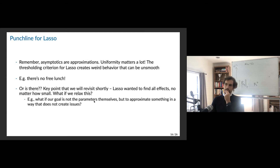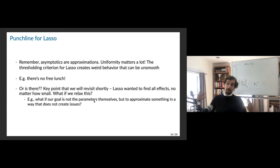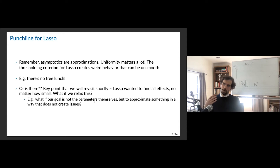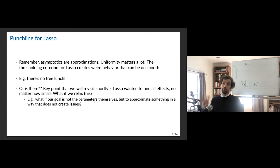Punchline for lasso: asymptotics are approximations, and uniformity matters a lot. The thresholding criterion for lasso creates weird behavior. The key point raised is that the Leeb-Pötscher complaint was about estimates of the parameters themselves. If you care less about that, or if you're willing to assume a lot of sparsity in some meaningful ways, then you can actually do really well. If you don't care about being wrong on a couple of things, you can actually do quite well in these settings.